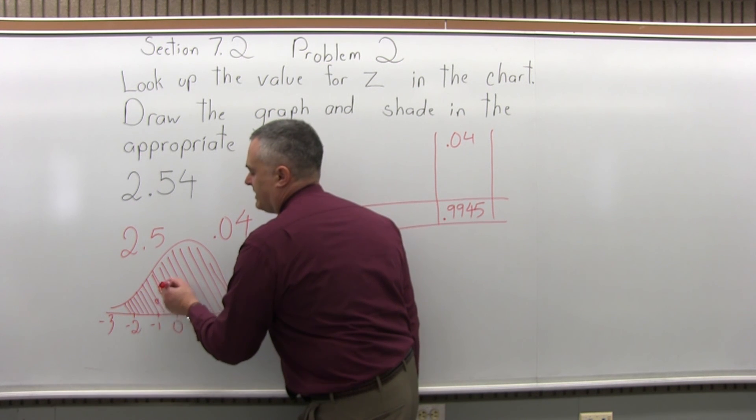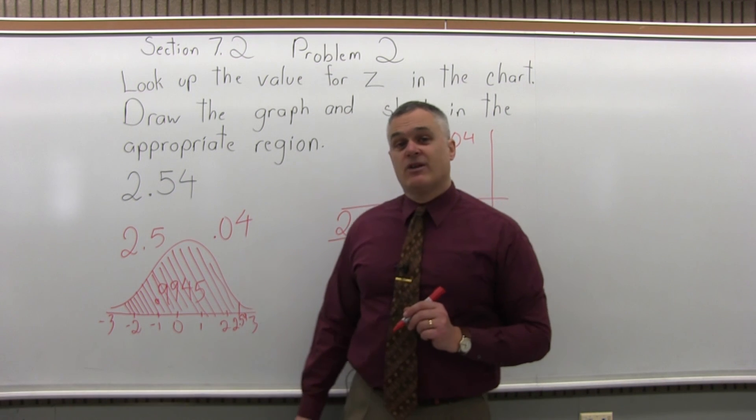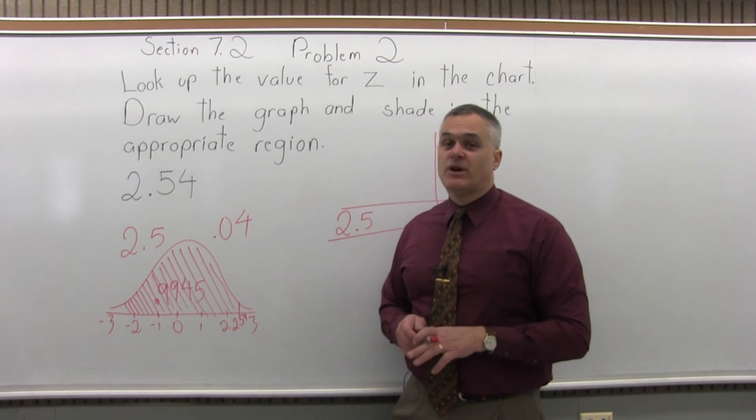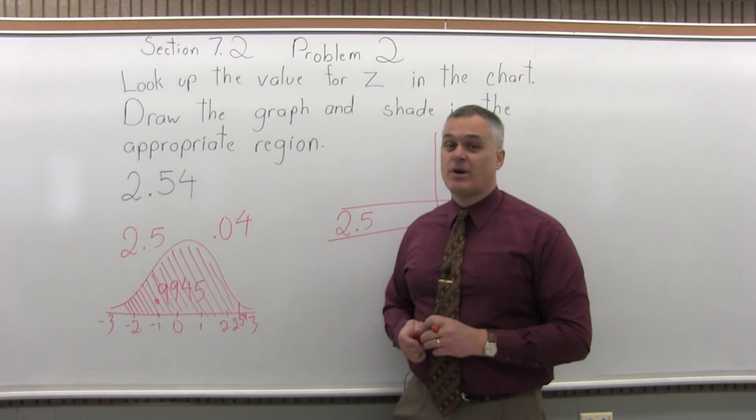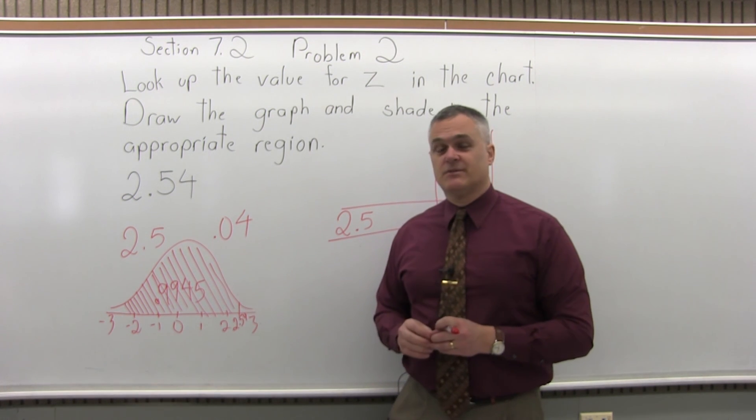And I'll indicate that area of our graph with these diagonal lines by shading it in like that. And the probability of being in that shaded area is 0.9945, so with some type of roundoff, about a 99.5% probability, which is very close to 100%.